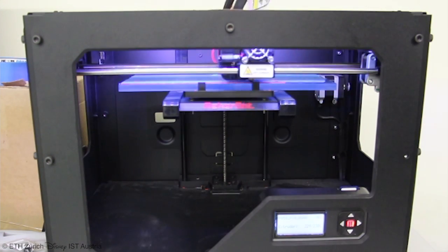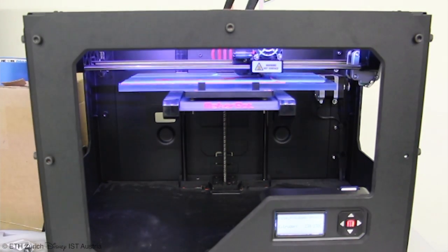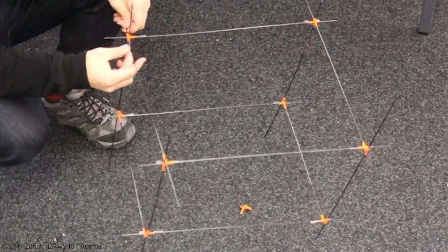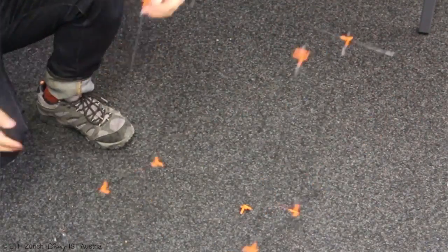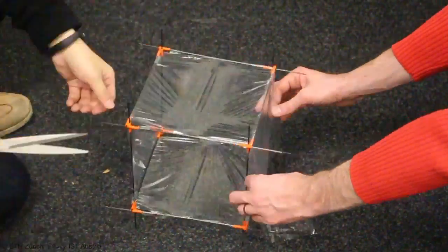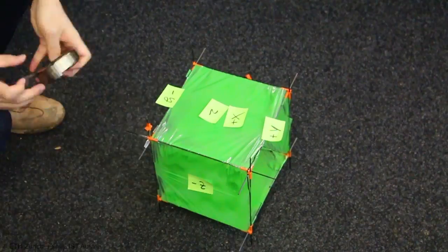Our system outputs 3D printable connectors to assemble carbon fiber rods that form a lightweight frame structure. We put kitchen wrap around it to fabricate a light and functional kite.